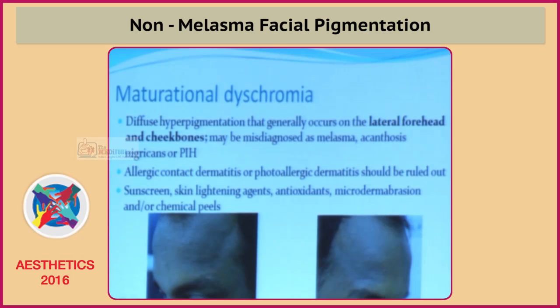Coming to maturational dyschromia — there are a group of conditions: maturational dyschromia, seborrheic melanosis, facial acanthosis nigricans, which require little further characterization. I think probably in the next few years they would be characterized a little better. I'm going to try and attempt to make some kind of a distinction.